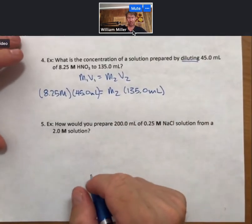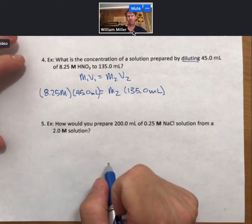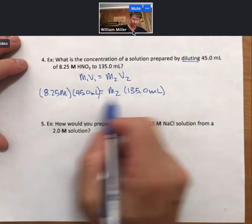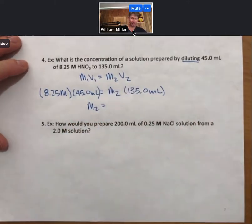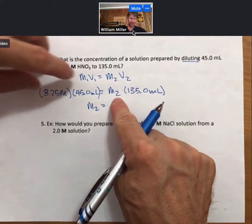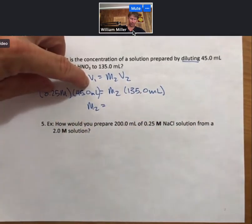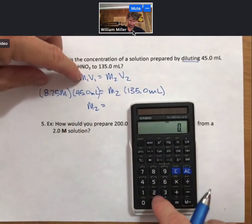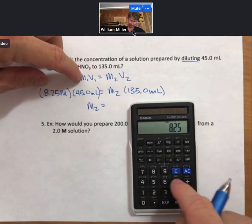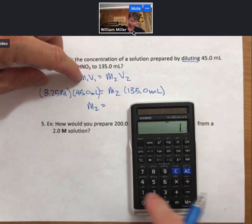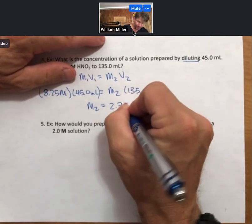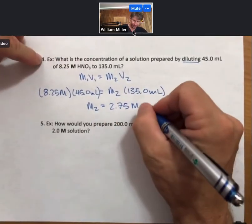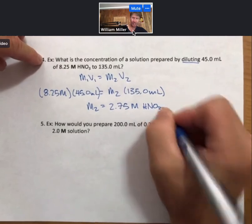And solve for M2, our more diluted concentration. And you can see the units are going to cancel out. We're going to be left with units of molarity. Let's see. Take these two numbers, divide them by 135. So 8.25 times 45 divided by 135. I get 2.75 molarity nitric acid.